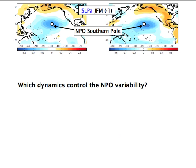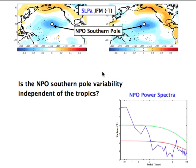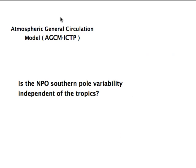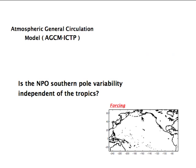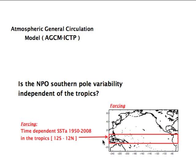Let's focus on the southern pole of the NPO and ask which dynamics control NPO variability and whether the NPO southern pole variability is actually independent of the tropics. Interestingly, if we take a power spectra of a sea level pressure record over Hawaii, we find the spectrum is very red, especially at low frequency, suggesting ocean-atmosphere coupling. To investigate this, we use an atmospheric general circulation model — the AGCM from ICTP, also known as SPEEDY — driven with prescribed SST. Specifically, we use time-dependent sea surface temperature anomalies between 1950 and 2008 in the tropical Pacific within 12 degrees of the equator.